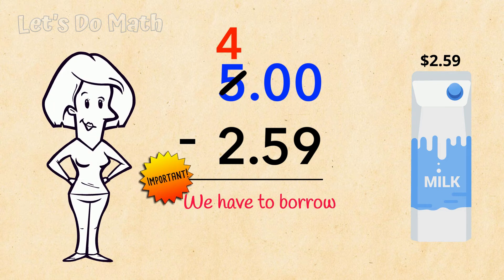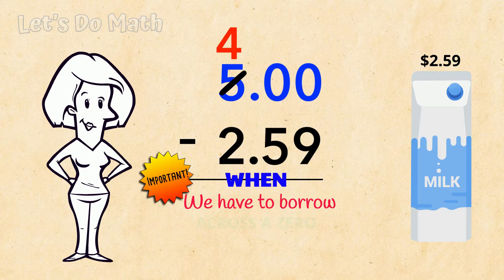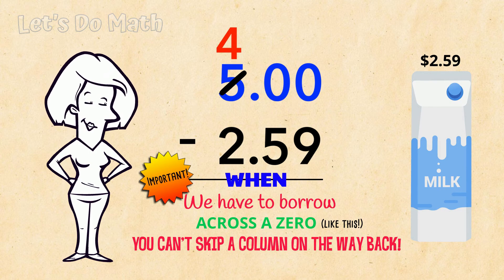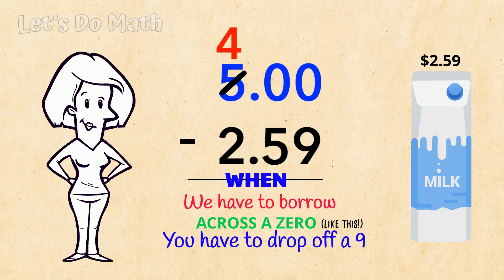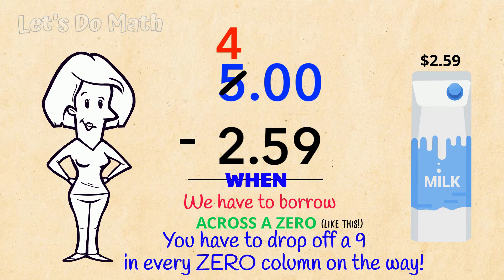There's an important step to remember when you have to borrow across a 0 like this. You can't skip a column on the way back. You have to drop off a 9 in every 0 column you hopped over on the way.